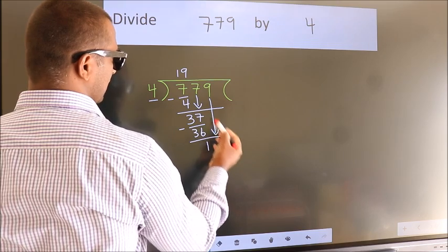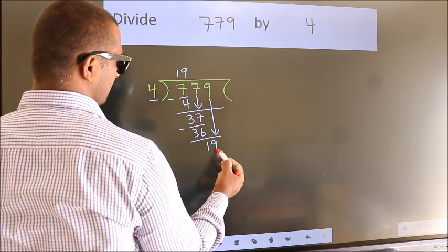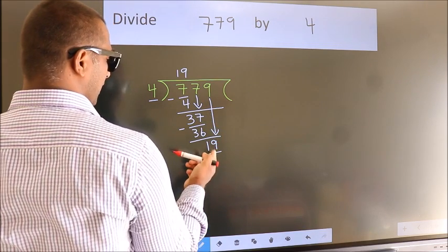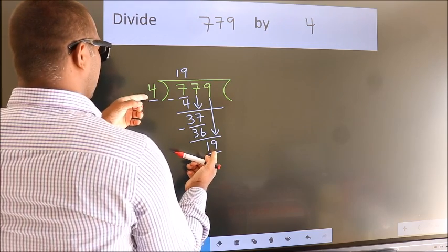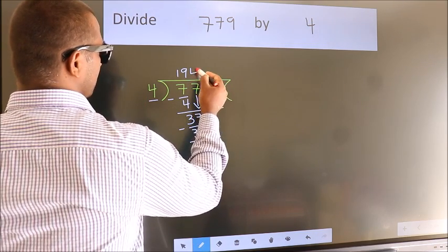So 9 down, so 19. A number close to 19 in the 4 table is 4 fours, 16.